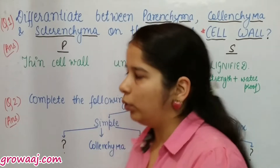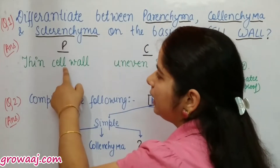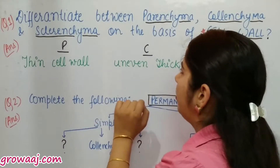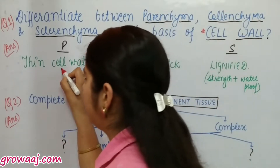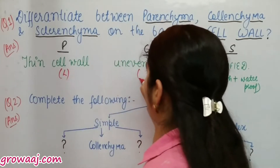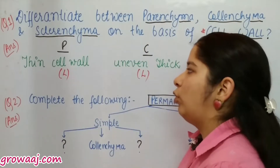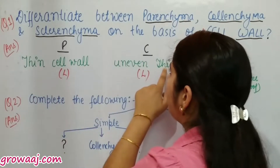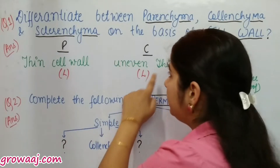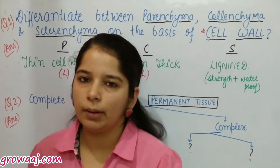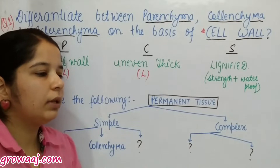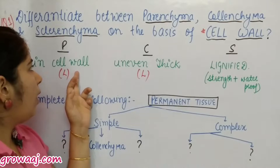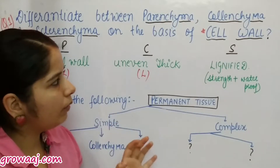In collenchyma, the cells are also living, but the cell wall here is uneven — meaning it is thick in some places and thin in others. This is unlike parenchyma where the cell wall is uniformly thin. So collenchyma has an uneven, irregularly thickened cell wall.